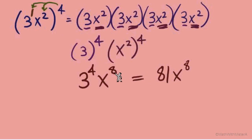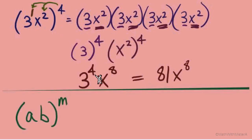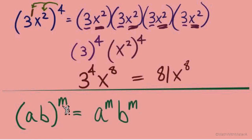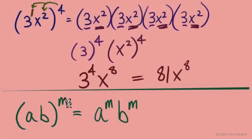To summarize: 4 times 2 gives us the exponent of x to the 8th, and 4 times 1 gives us the exponent of the 3. We can state this as a rule: if we have some expression a times b all to the power of m, the exponent outside of parentheses belongs to every single base inside the parentheses. That's the key idea — the exponent must work on every base inside the parentheses.